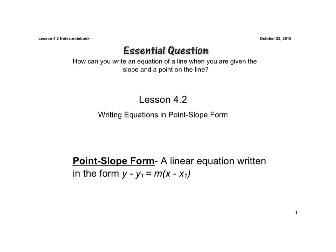Good evening, Titans. This is Mr. Simpson again, and tonight we'll be discussing Lesson 4.2. The essential question is how can you write an equation of a line when you are given the slope and a point on the line?